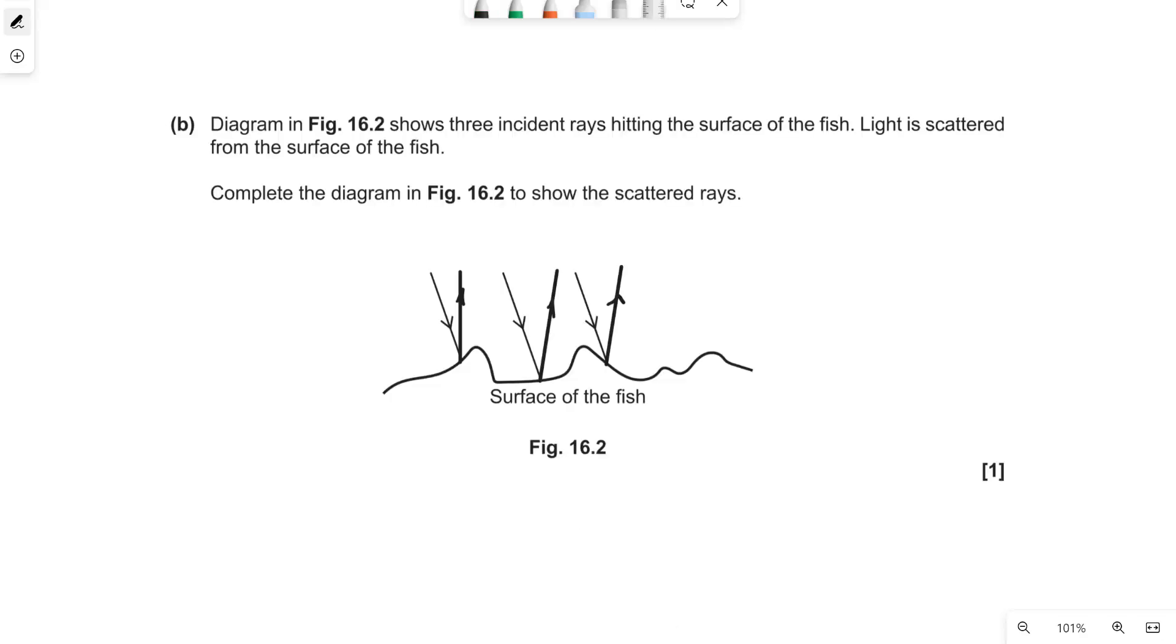Next one the diagram shows three incident rays. Complete the diagram to show the scattered rays. So what actually happens is that a light ray hits the surface of the fish and then it will get reflected and the angle of incidence equals the angle of reflection. So I'm trying to include this rule. Where we have all of these three different rays they all kind of get reflected in slightly different directions.